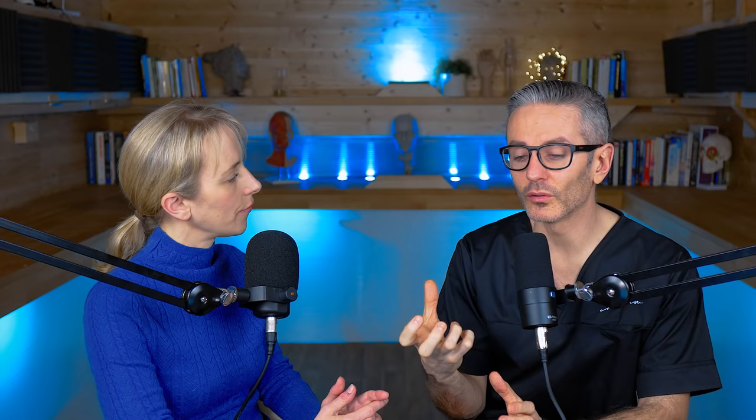When injecting the masseter, apart from using a different boundary that keeps you away from the insertion point of risorius, the other really important thing is to make sure that you're deep enough. The risorius muscle inserts into the fascia around the masseter, so it's relatively superficial. If we make sure we're deep, we're both inferior to it and too deep to actually hit the risorius — that's an effective way of reducing that risk.